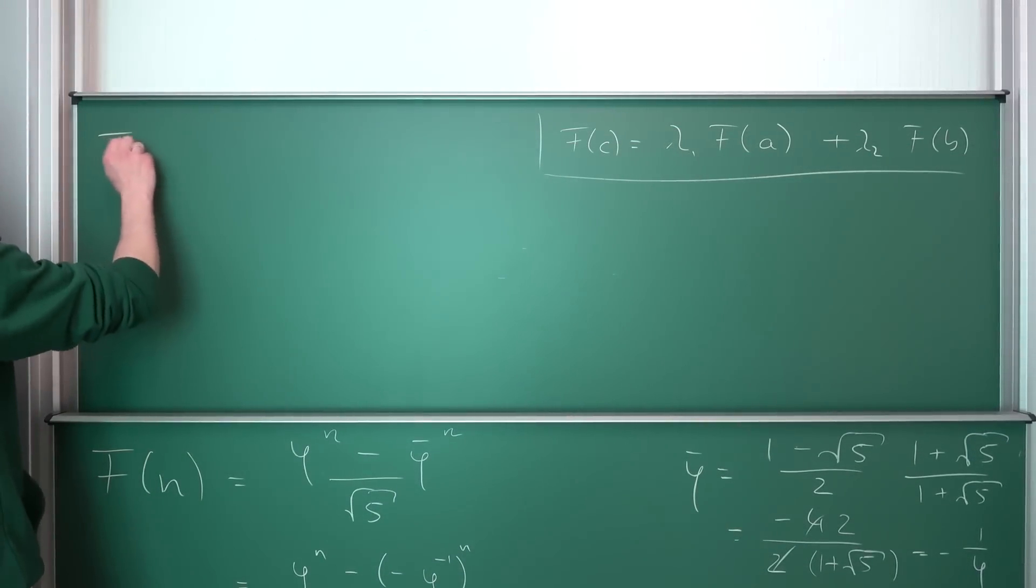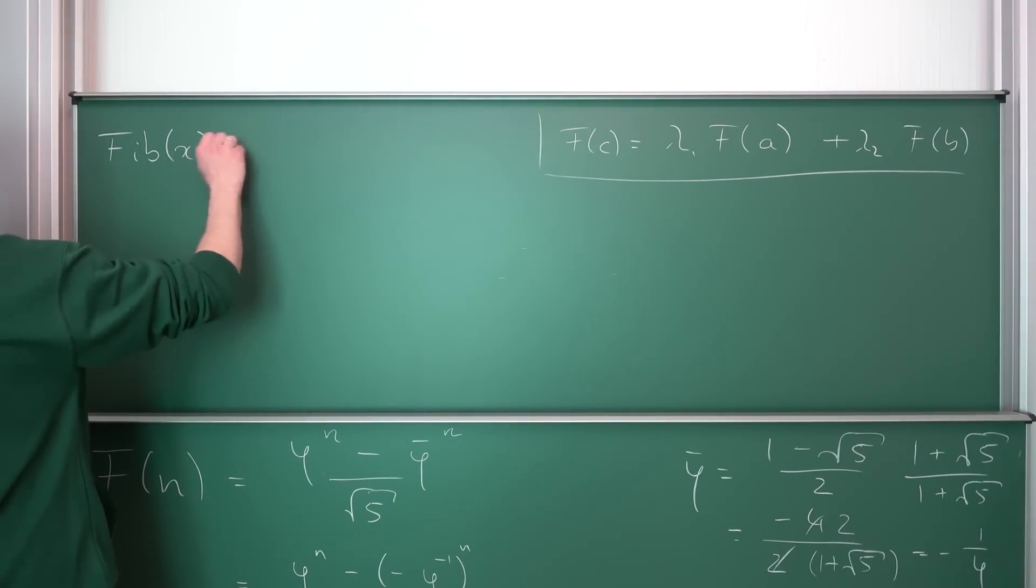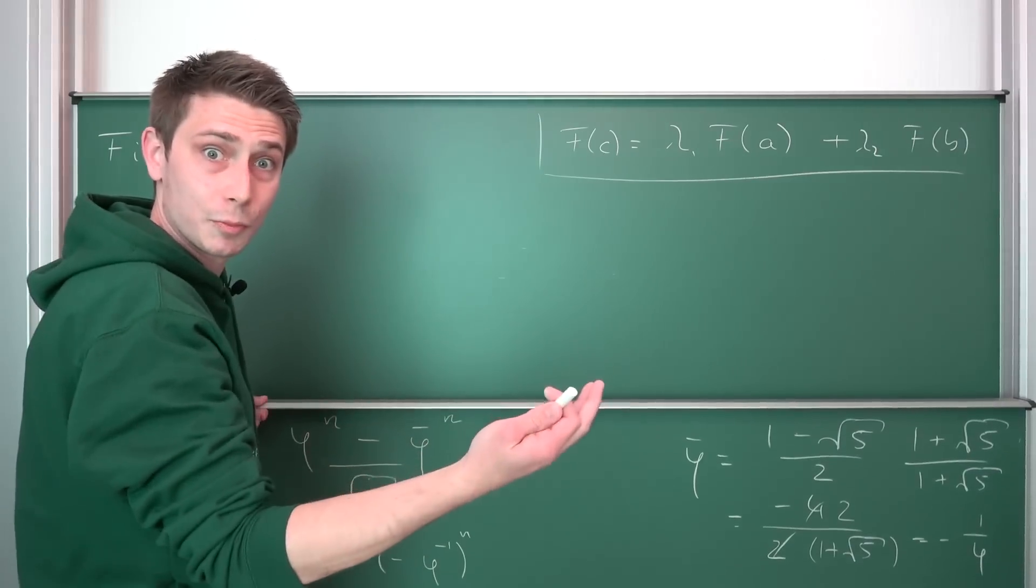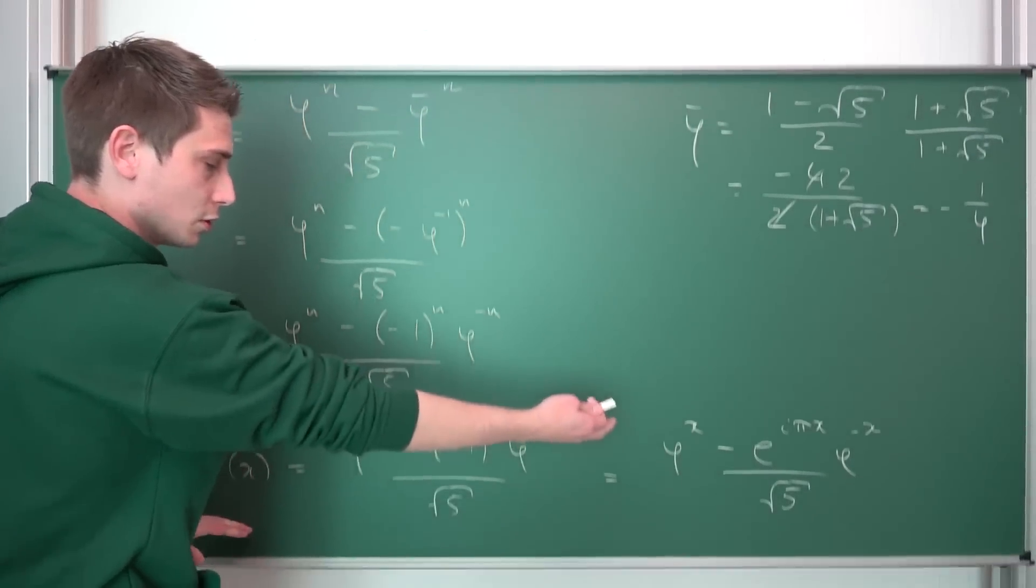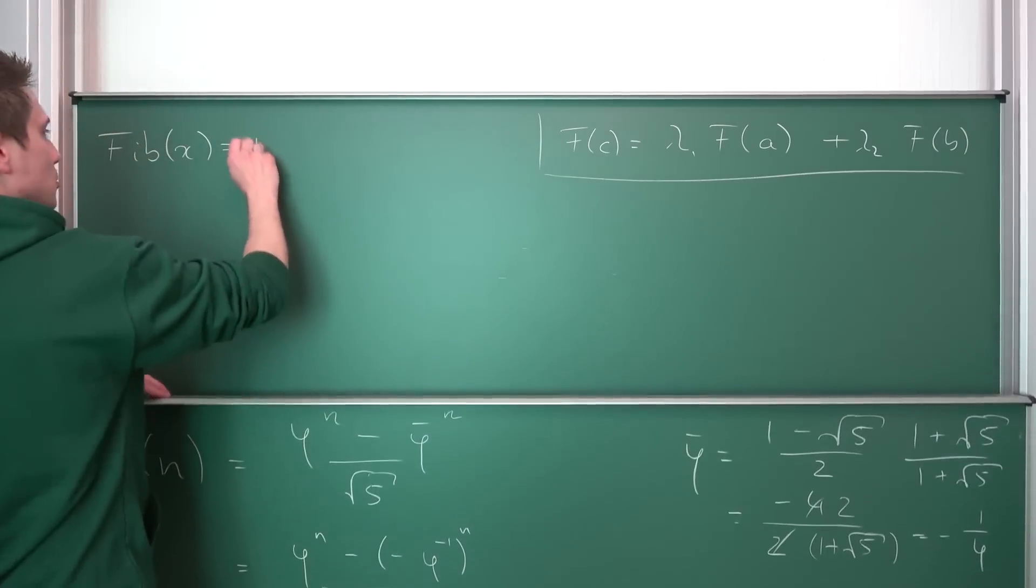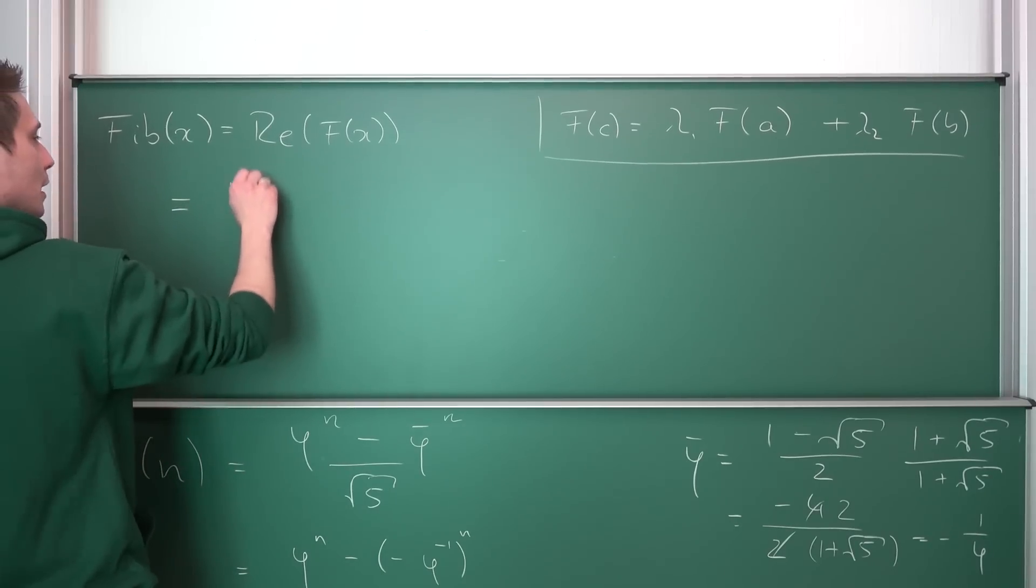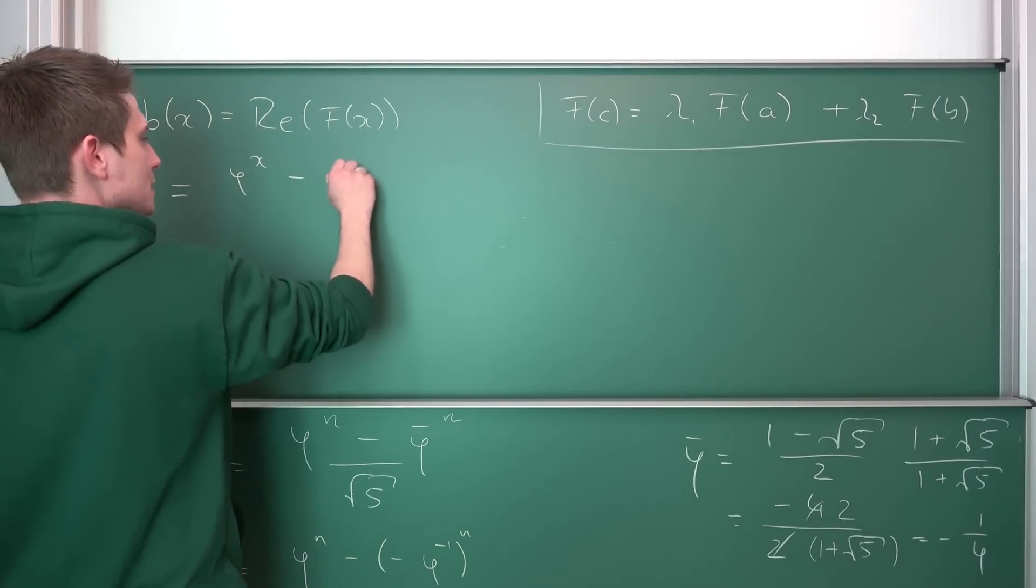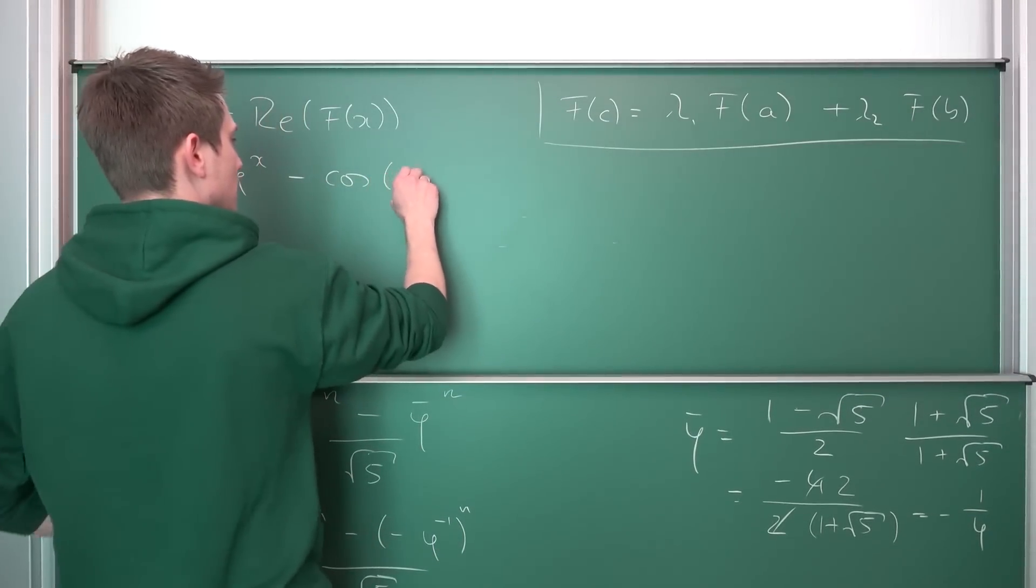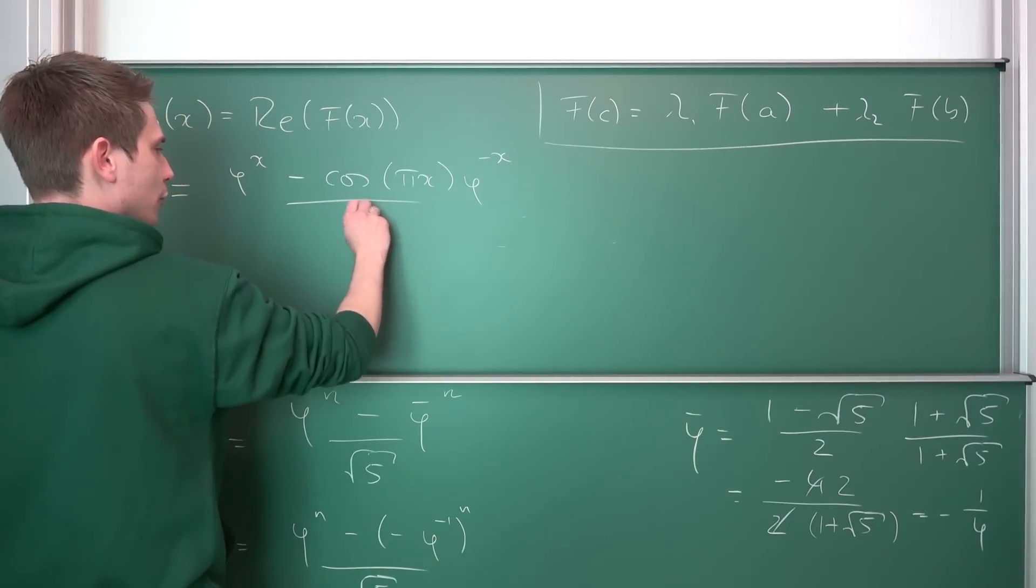So we are going to define ourselves a new function. I'm going to call it Fib of x, which is overall a superposition, a linear combination of Fibonacci numbers, of solutions to the Fibonacci sequence, but it's also just the real part of f of x. So that's the real part of f of x, which is nothing but phi to the x power minus, and the real part, using Euler's formula, it's just cosine pi times x, phi to the negative x power over square root of 5.